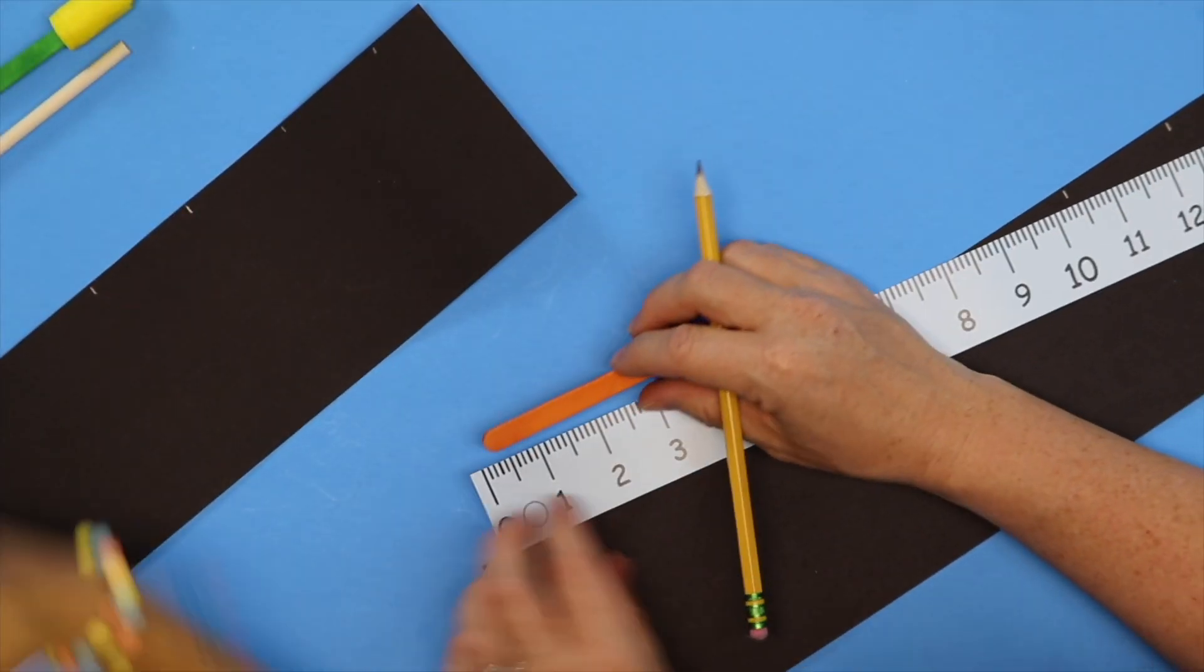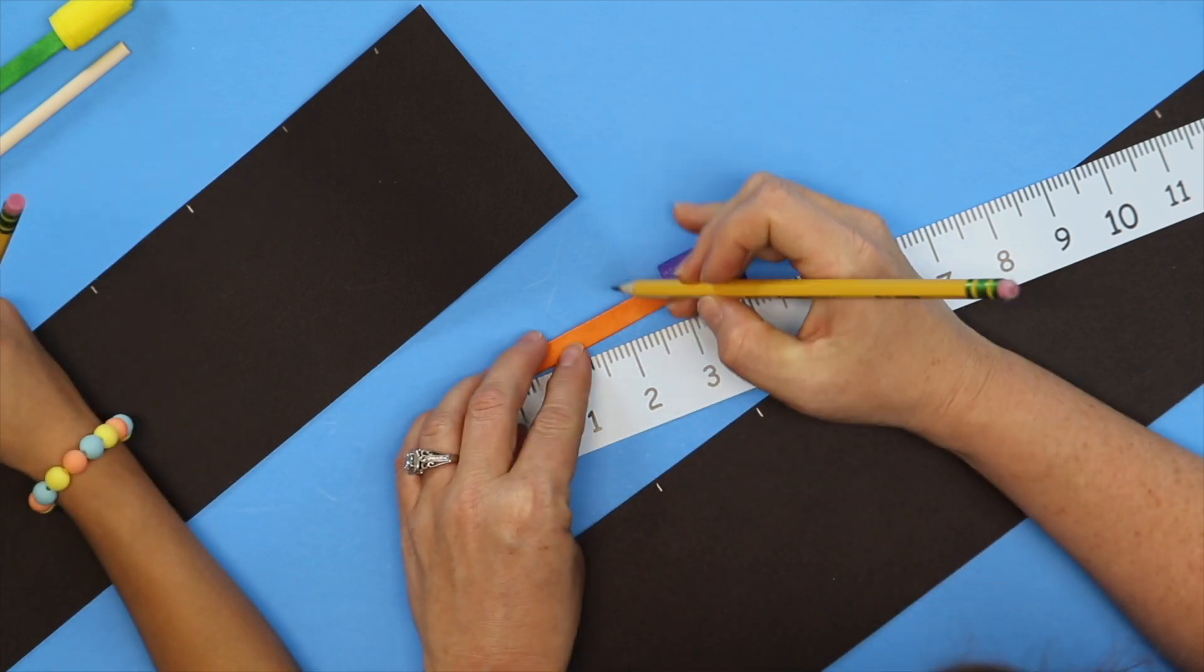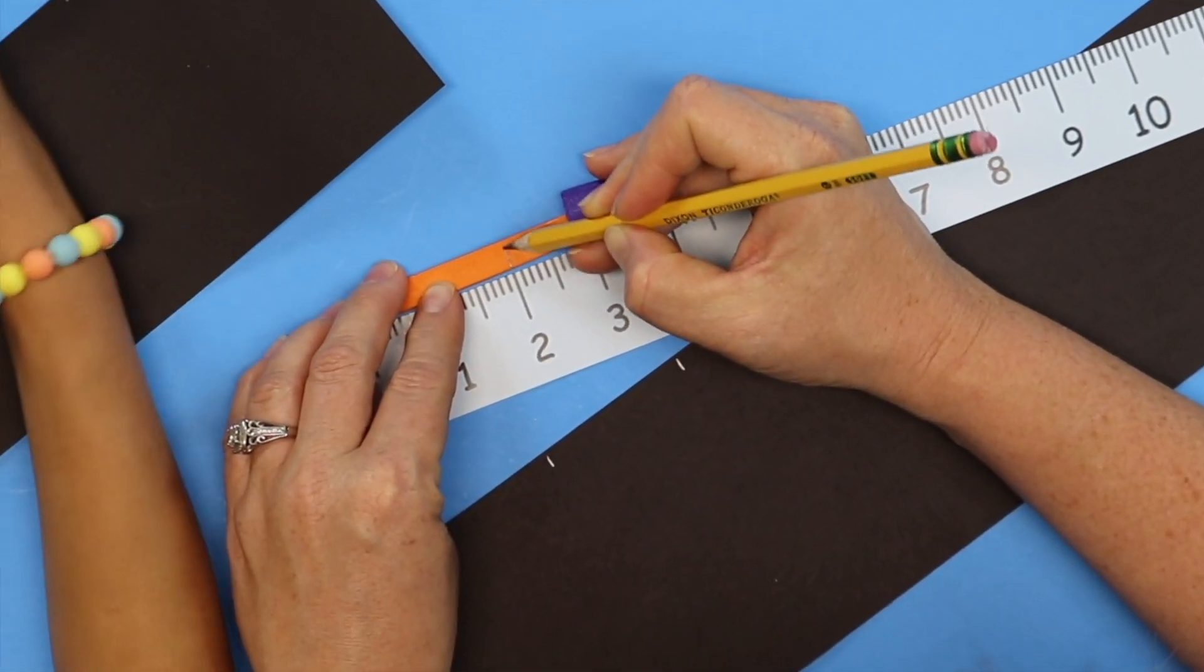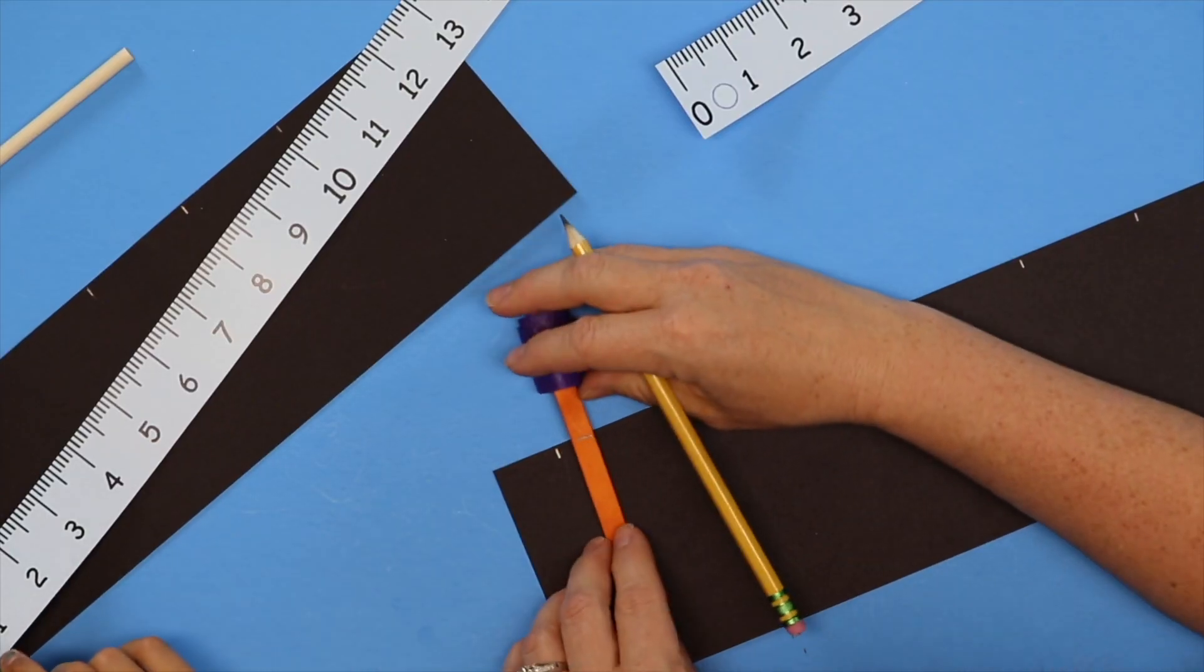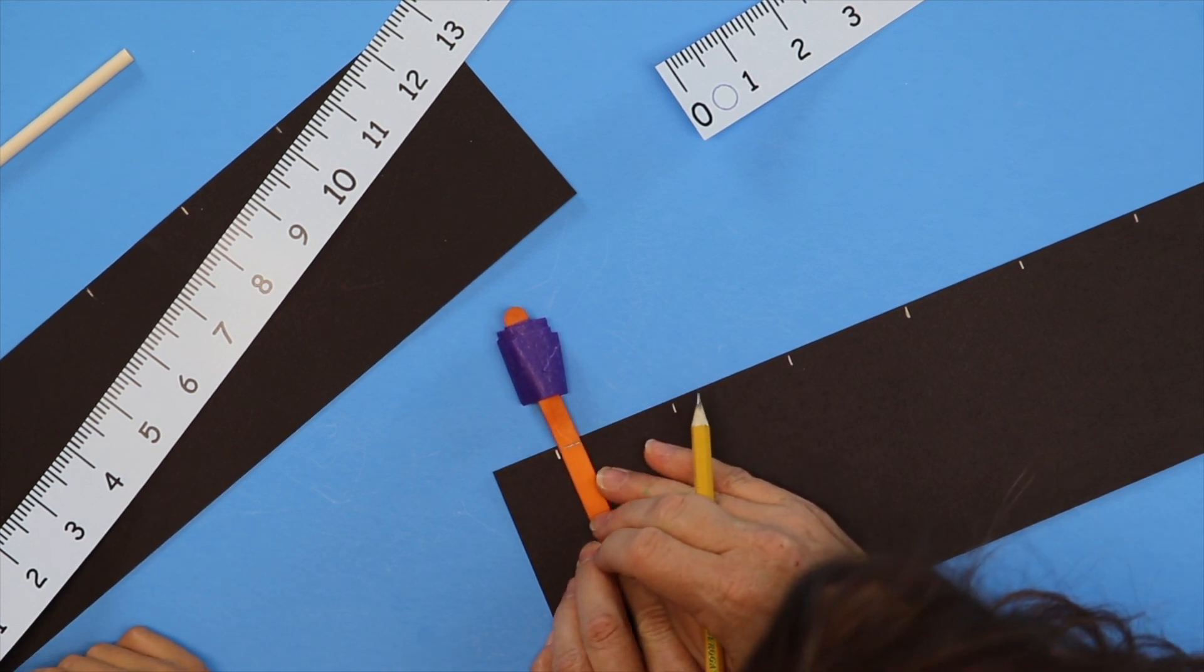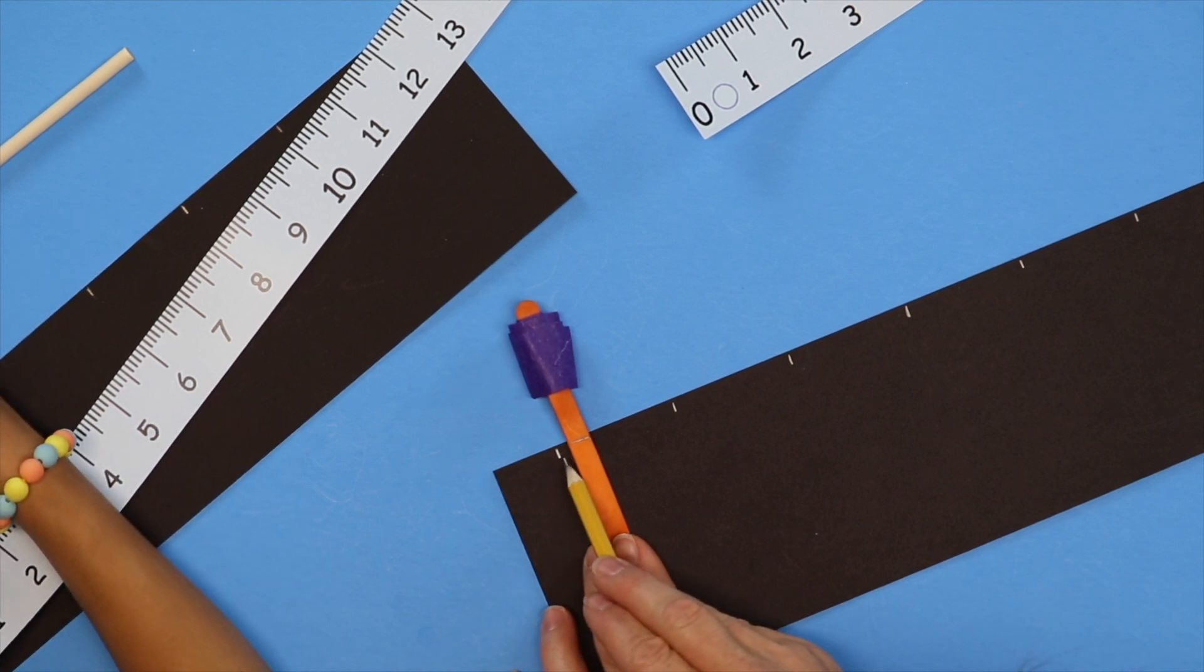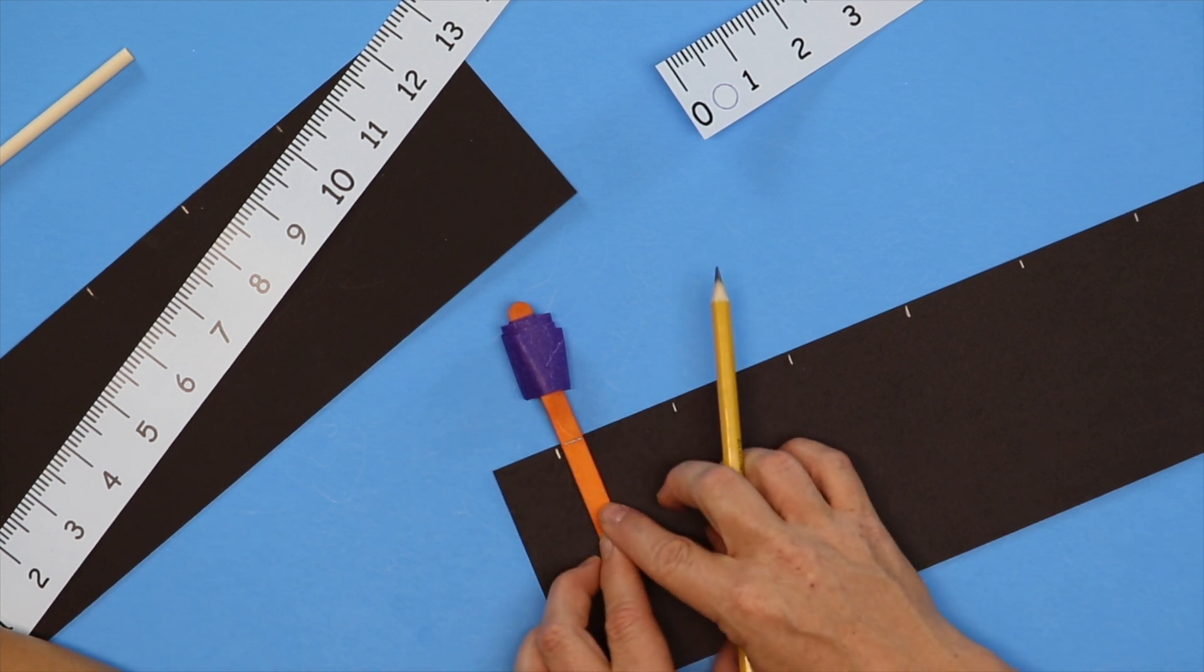Okay, then we're going to take our ruler and the popsicle stick and line the ruler up with the zero and measure at two inches. We're going to draw a line all the way across our popsicle stick. Okay, now we're going to take our popsicle stick and line up our two inch line on the top of the black paper and the left side of your popsicle stick is going to line up with your mark. Okay, so that's your one inch mark, your very first mark. Make sure you can see it and then you're lining that up. Good, you got it.